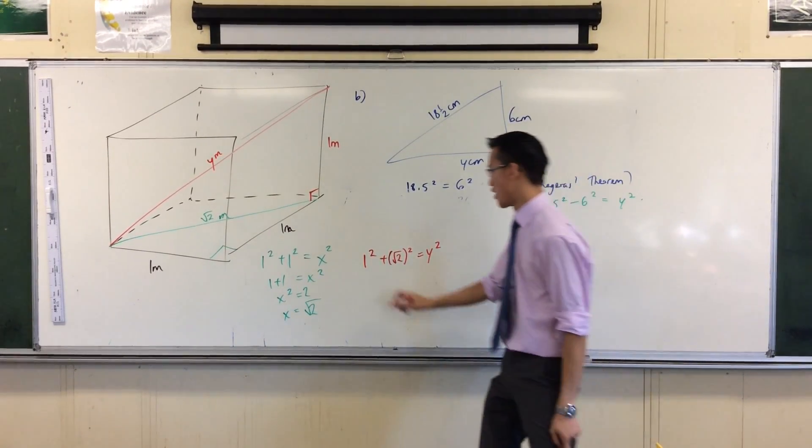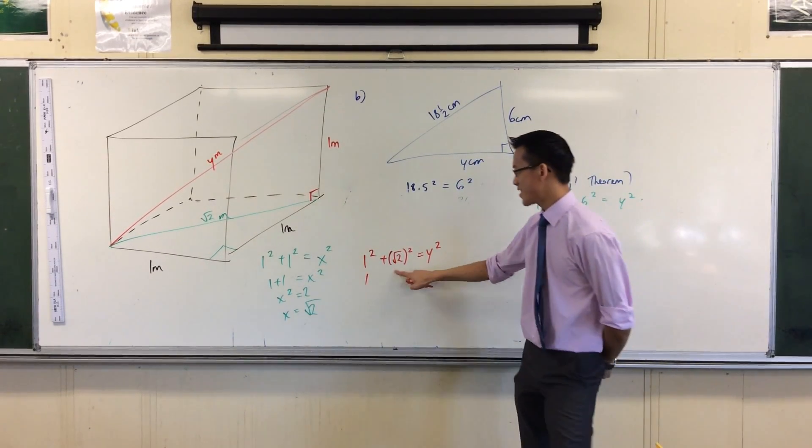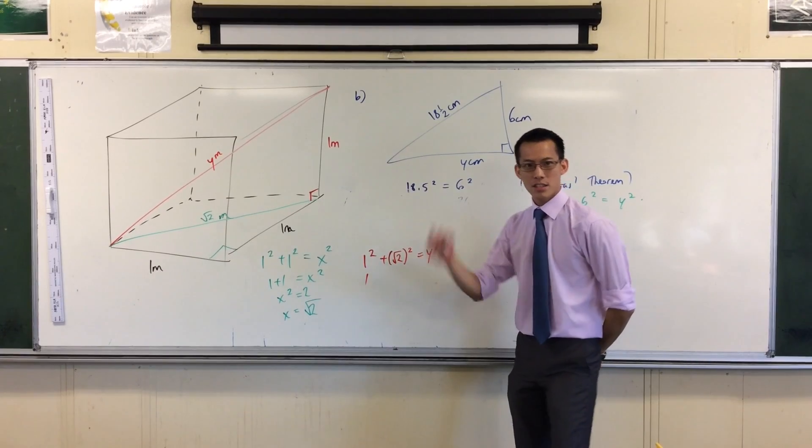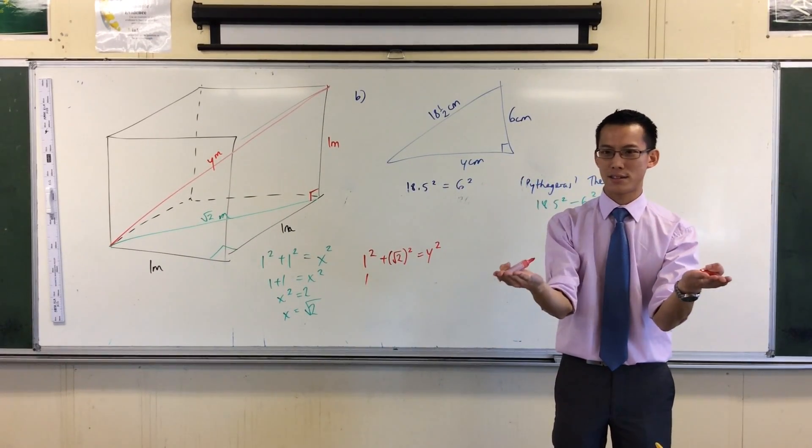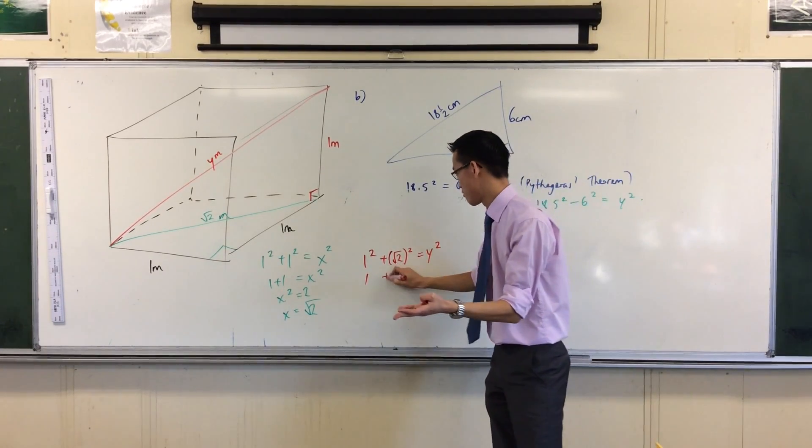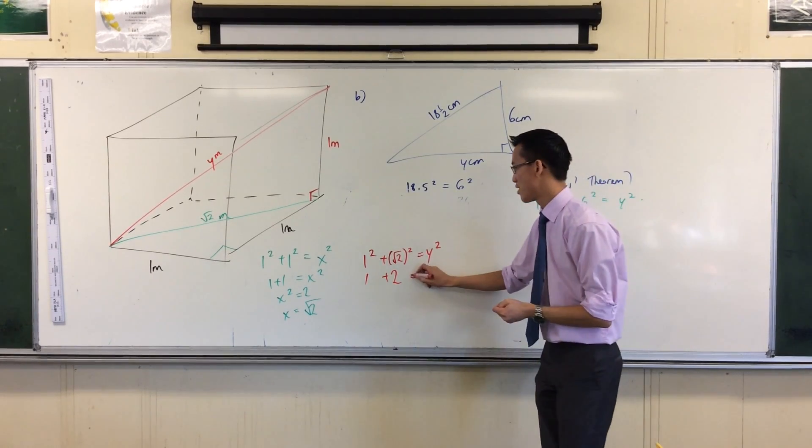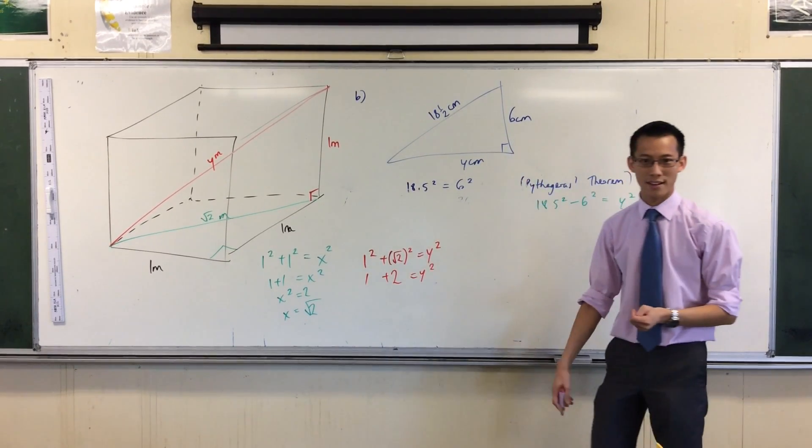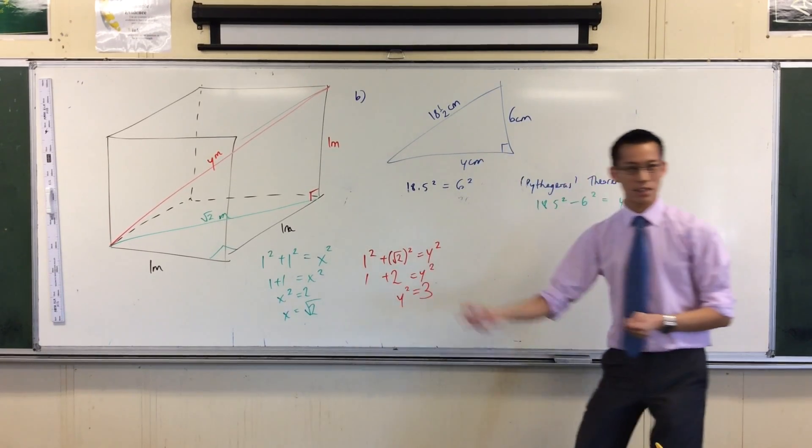One squared, you guys already told me that before, and I have a very good memory, so that's one. Now what's this thing? It's the square root of two times the square root of two, which, square root just means if you square it you'll get two. Square root of two times the square root of two, and you can check it on your calculator. So that's y squared, so now I've got y squared equal to three.